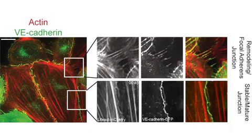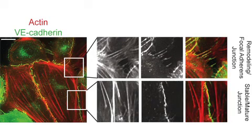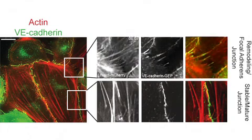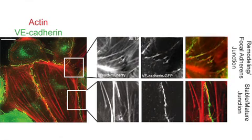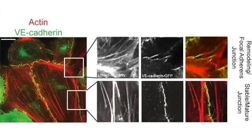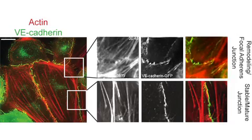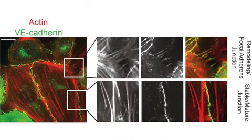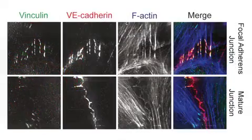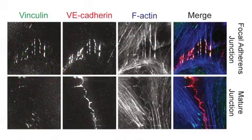These parallel-bundle junctions are close and very thick but not really connected, and they are dynamic but don't actually remodel. Then there are also junctions that have perpendicular actin bundles that actually connect to the junctions, and these junctions are much more dynamic and are really remodelling.